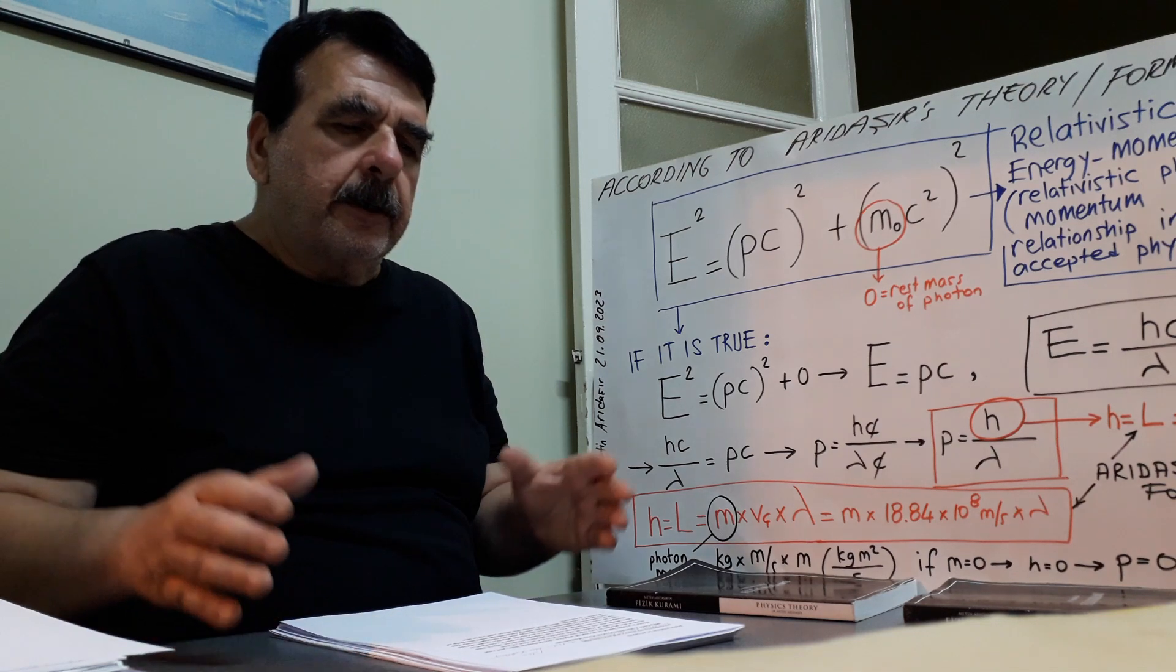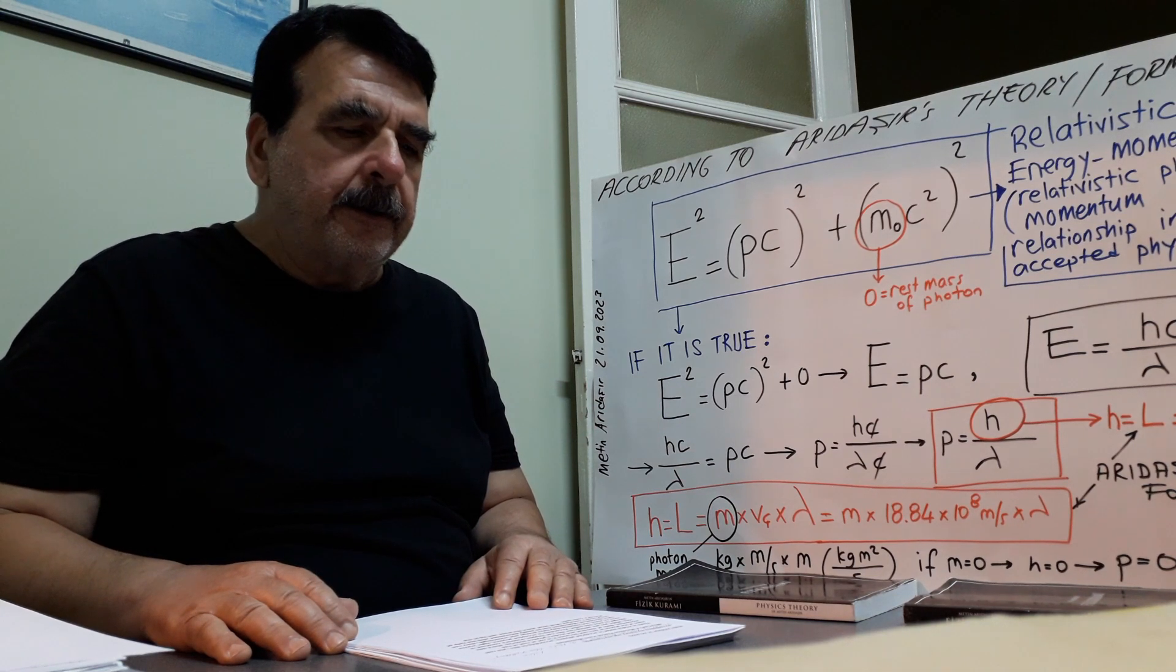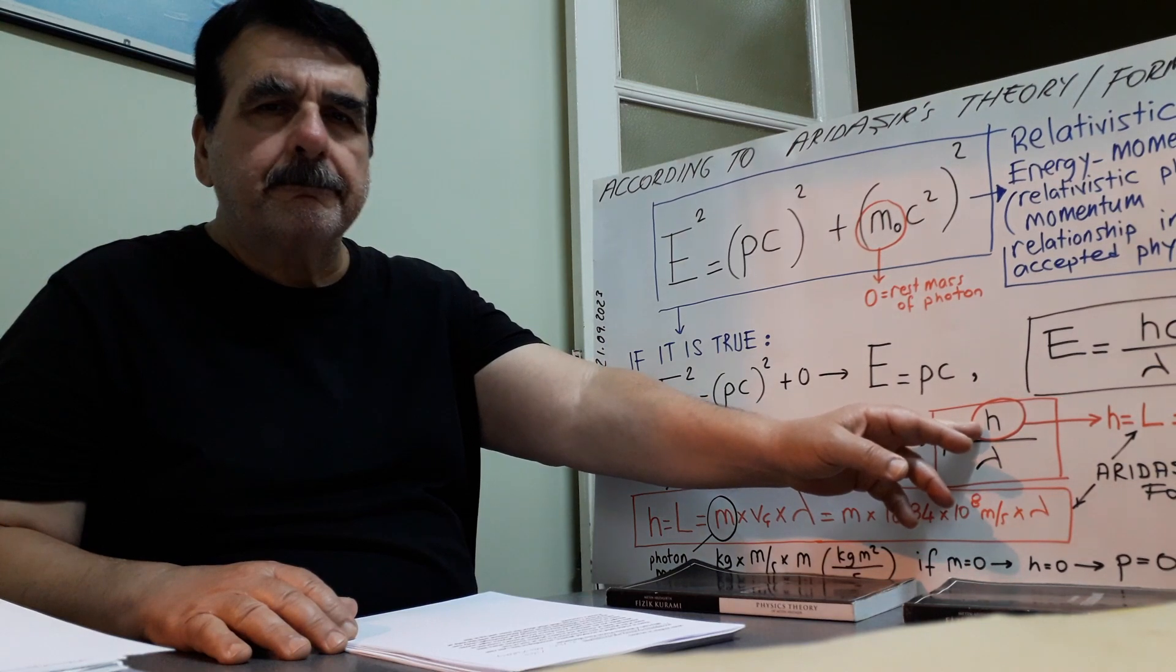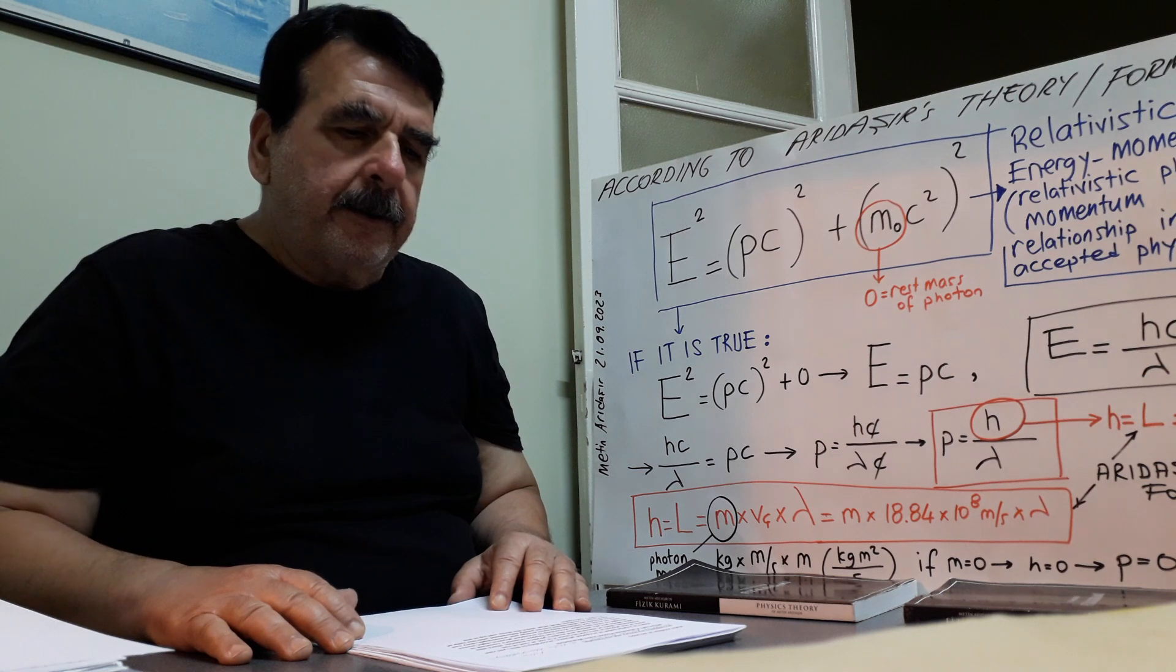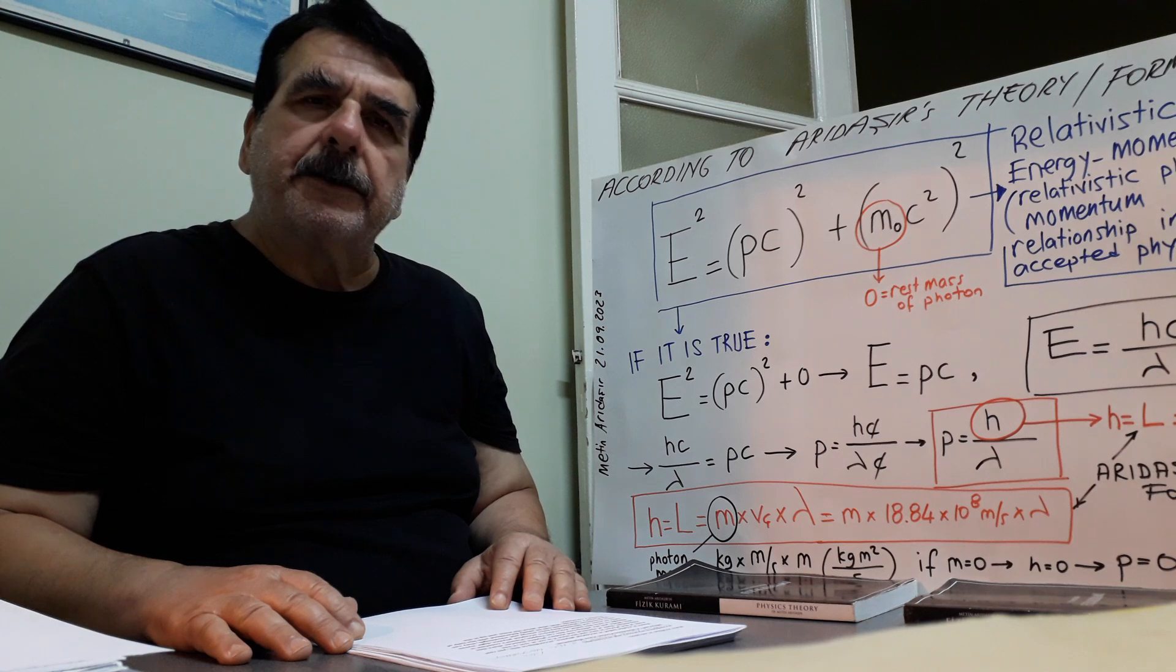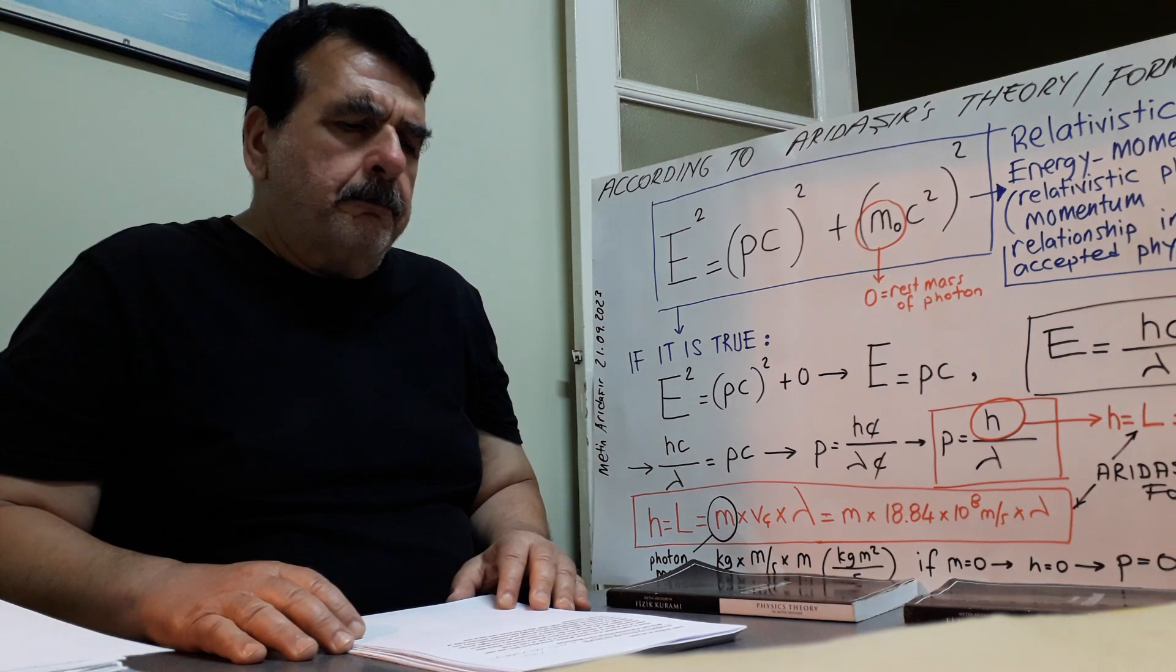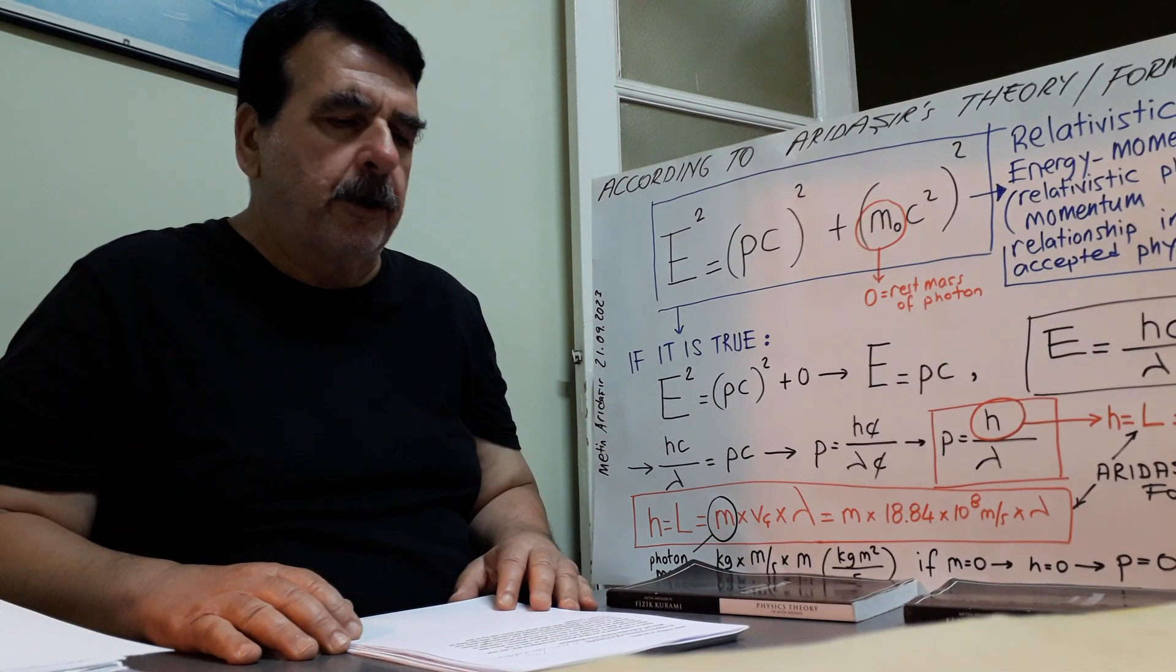While you are asking how this can happen, Planck's constant is taught to save this belief. According to accepted physics, light waves have no mass, but because they have energy and wavelength, they can have momentum. Momentum can be easily determined with the help of Planck's constant.